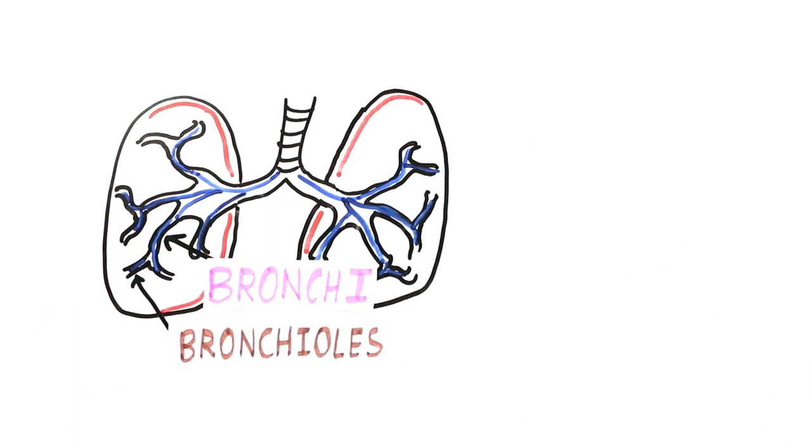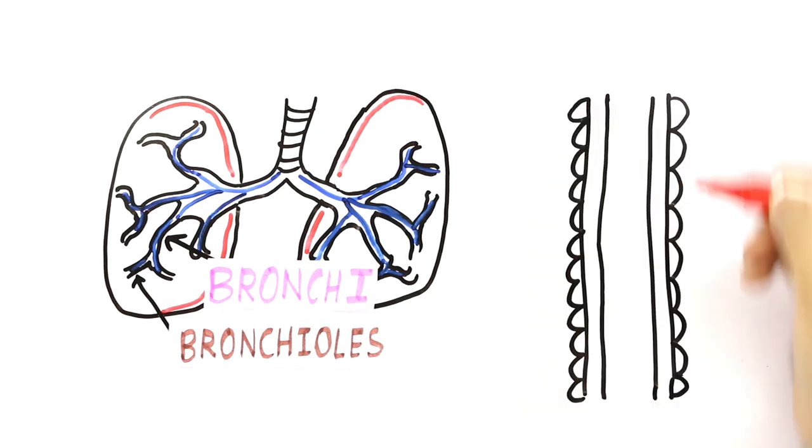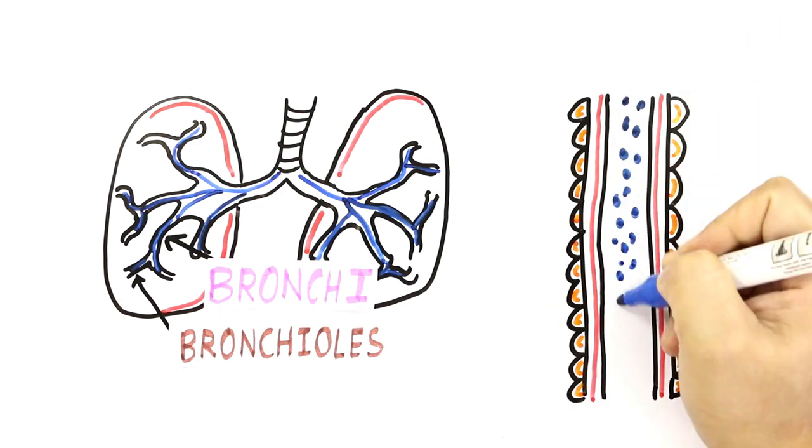These bronchi are like pipes having different layers. The inner lining is called mucosa which is surrounded by smooth muscles. These linings facilitate the passage of air by maintaining a healthy space for air to move.